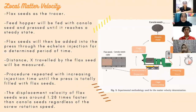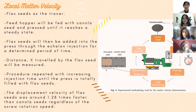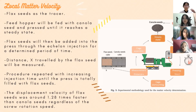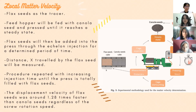For the calculation of local material velocity, flax seeds are used as a tracer since they can be easily detected and differentiated from canola seeds due to the difference in colour. The feed hopper is fed with canola seed and pressed until it reaches steady state. The flax seed is then added into the press through the injection point for a determined period of time. Once the press is stopped, the cage is opened and the distance x travelled by the flax seeds is measured. The procedure is repeated multiple times with increasing injection time until the press is totally filled with flax seeds. Studies have shown that the displacement velocity of flax seeds was around 1.28 times faster than canola seeds, regardless of screw rotation speed.